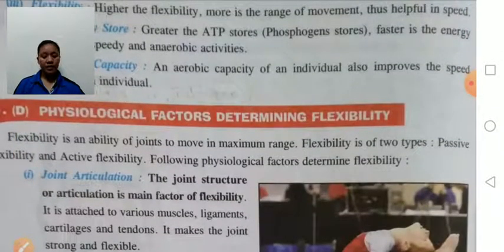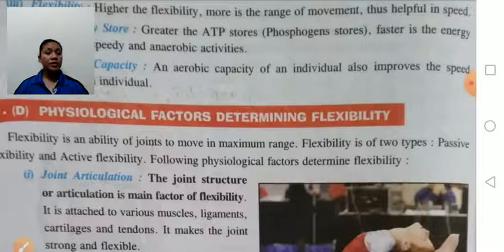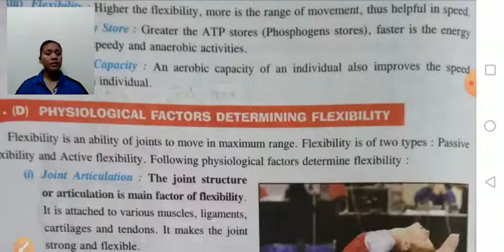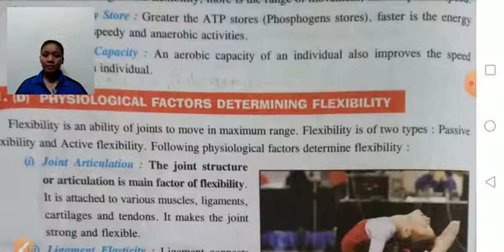Next: physiological factors determining flexibility. Flexibility is the ability of a joint to move in maximum range, or it is the ability of the joint to stretch to a maximum range. Flexibility is of two types: passive flexibility means the ability to stretch your joint with the help of a partner; active flexibility means the ability to stretch your joint to its maximum range without external help.